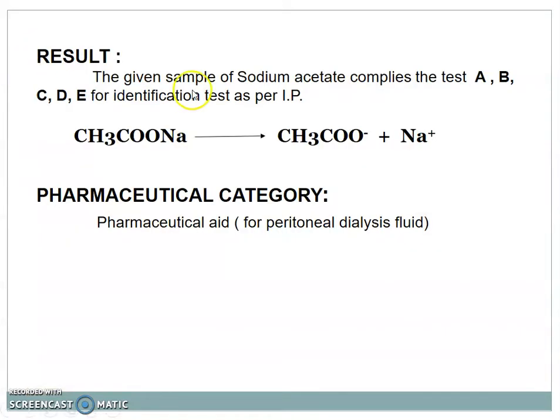Result: The given sample of sodium acetate complies the test A, B, C, D, and E for the identification test as per IP. Sodium acetate, CH3COONa, gives CH3COO- and Na+ ion. Pharmaceutical category of sodium acetate is pharmaceutical aid, that means it is used for peritoneal dialysis fluid.